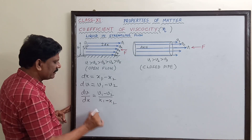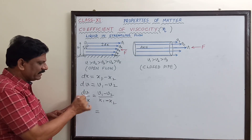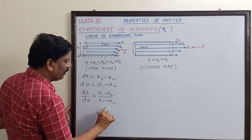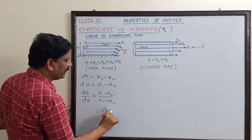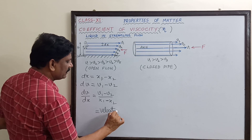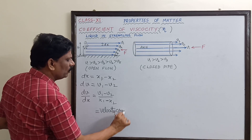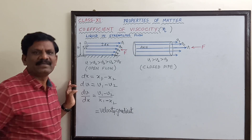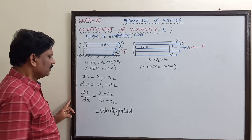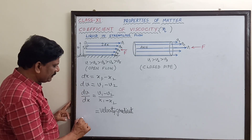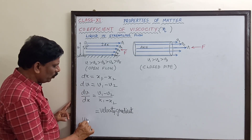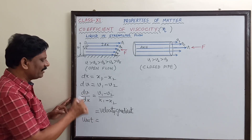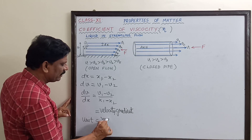This change in velocity divided by the distance of separation is called the velocity gradient — this is a new term. So dv/dx is the velocity gradient. Its unit: change in velocity is meters per second, divided by distance in meters,